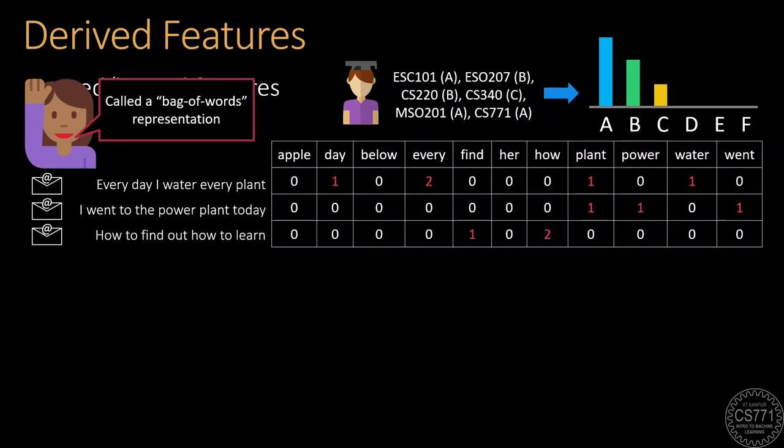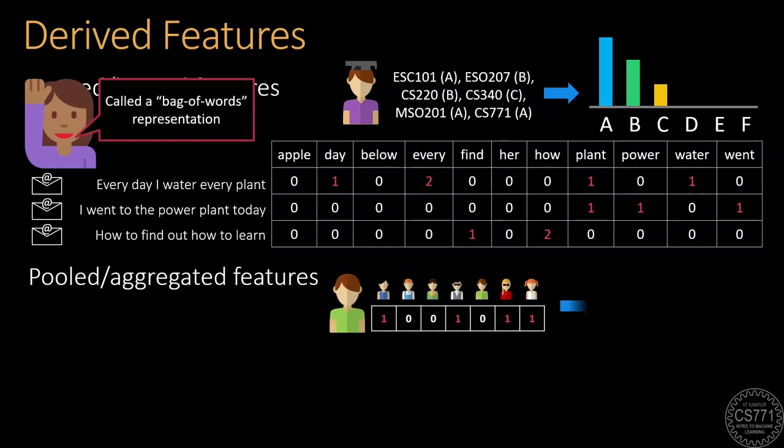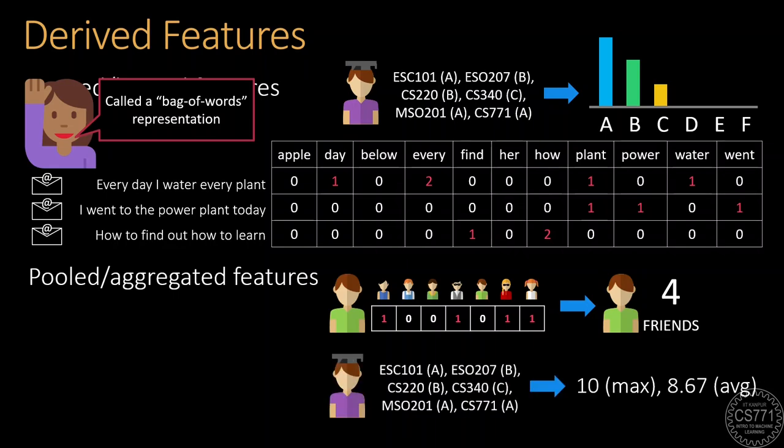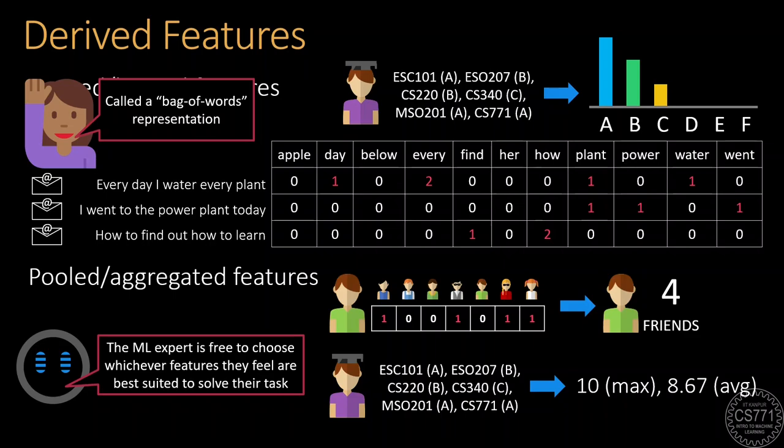The other kind of derived features that are very popular are called pooled or aggregated features. These could include taking, let's say, the friend list of a person and simply counting how many friends they have. Similarly, in the grades example, instead of reporting the list of grades on all the courses for a student, we could just report the average grade of the student or the maximum grade they have achieved in any given course. Note that we, as the designers of the machine learning algorithms, are completely free to choose whichever features of the data point we feel are most useful in solving the task we are interested in.